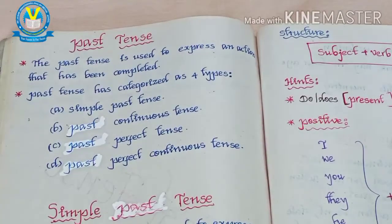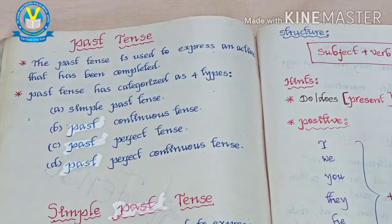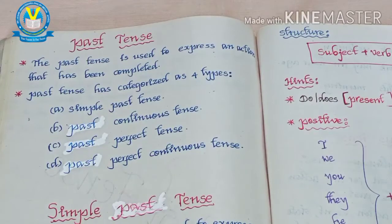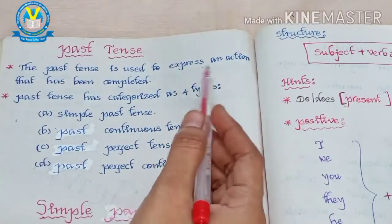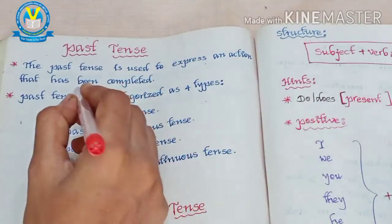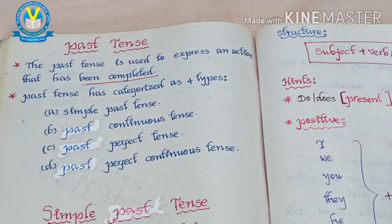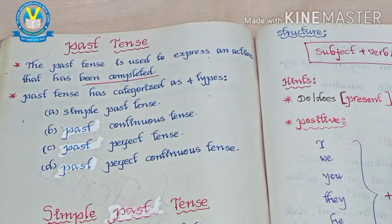In the previous lesson, we discussed about present tense and the four types of present tense. In this video, we are going to discuss about past tense. The past tense is used to express an action that has been completed — an already completed action. Past tense is of four types.